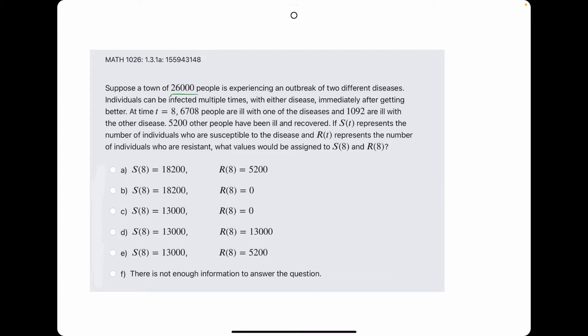They say there are initially 26,000 people, and they say individuals can be infected multiple times. What does this mean? This means that we can eliminate any answers that don't have R equals zero as part of its answer because R represents the number of individuals who are resistant, and if they tell us that individuals can be infected multiple times, even after getting better, then that means no one is resistant to this disease, or to both diseases, which is crazy. Alright, so it's either B or C.